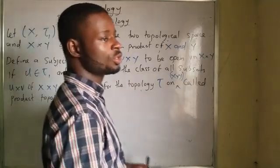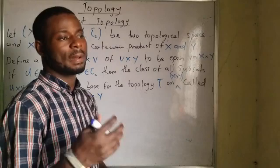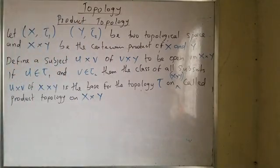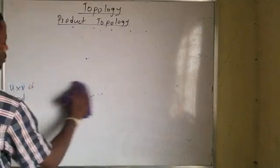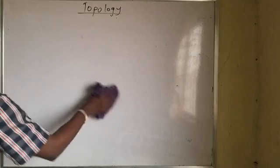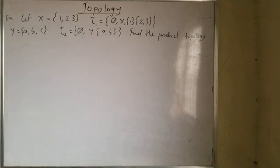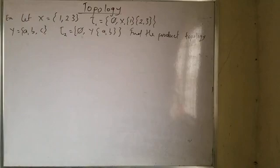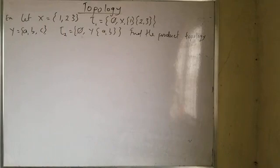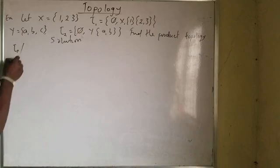Don't forget our previous video on basis and subbasis — it's very important because what we are talking about in product topology is related to basis. Let me show an example to explain this concept. The easiest way to go about this problem is to use a tabular form, with topology one and topology two forming the table.